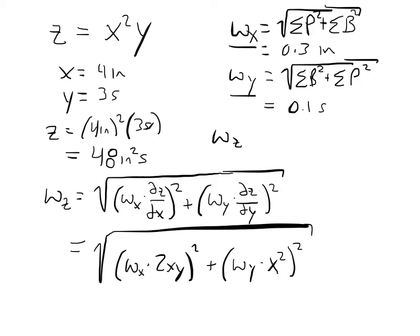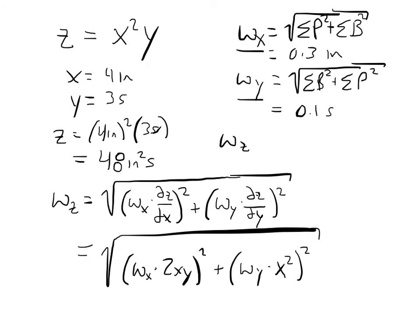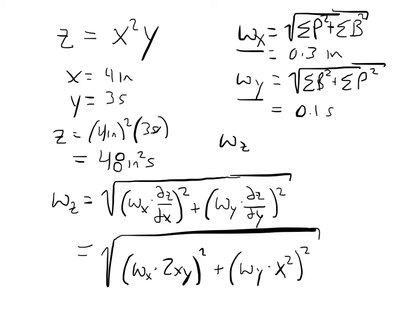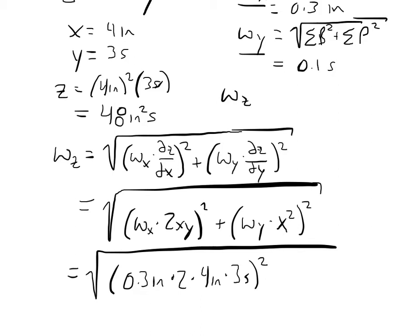And now, we have to plug in our calculated value. So, x is 4, y is 3, uncertainty in x is 0.3, and uncertainty in y is 0.1. That's going to equal the square root of the uncertainty in x, which is 0.3 inches, times 2, times x, which is 4 inches, times y, which is 3 seconds squared. Plus, our uncertainty in y, which is 0.1 seconds, times x squared, which is 4 inches squared, and that uncertainty is squared.